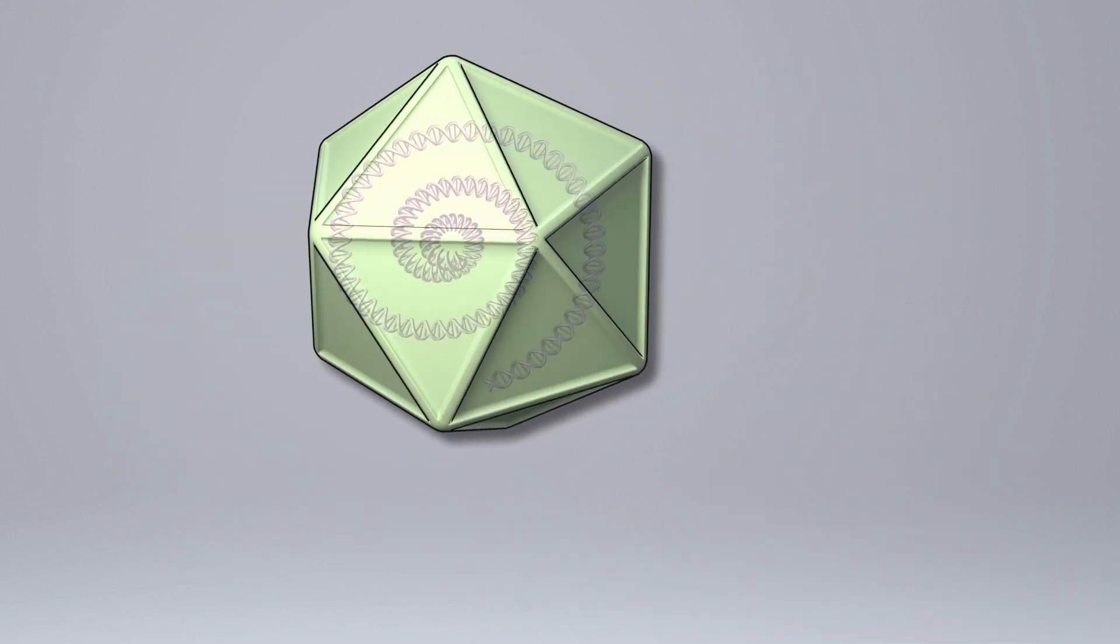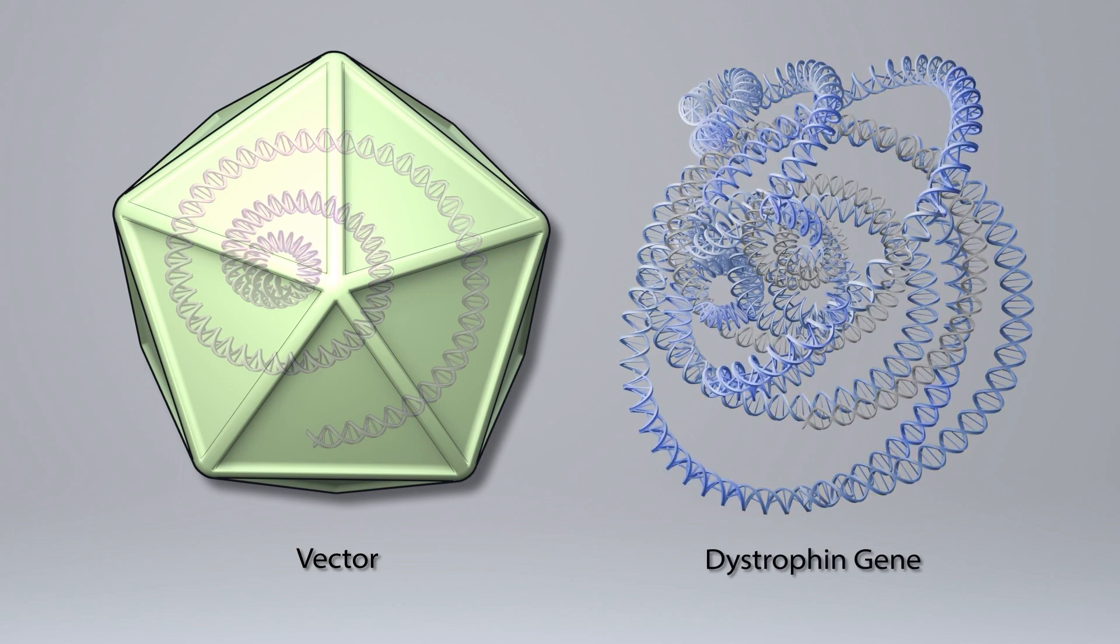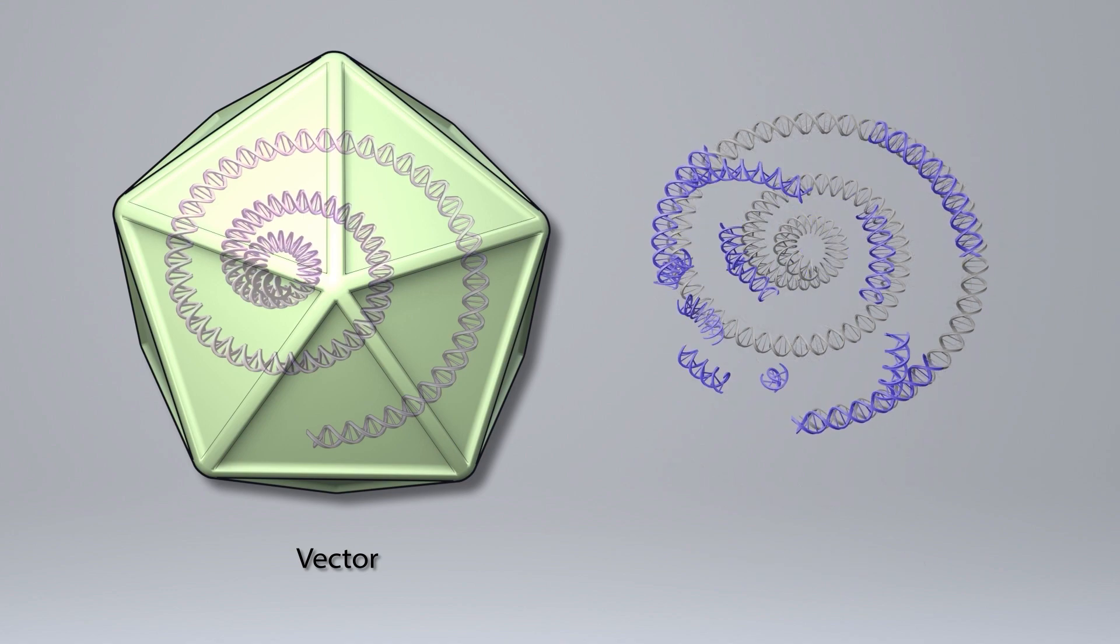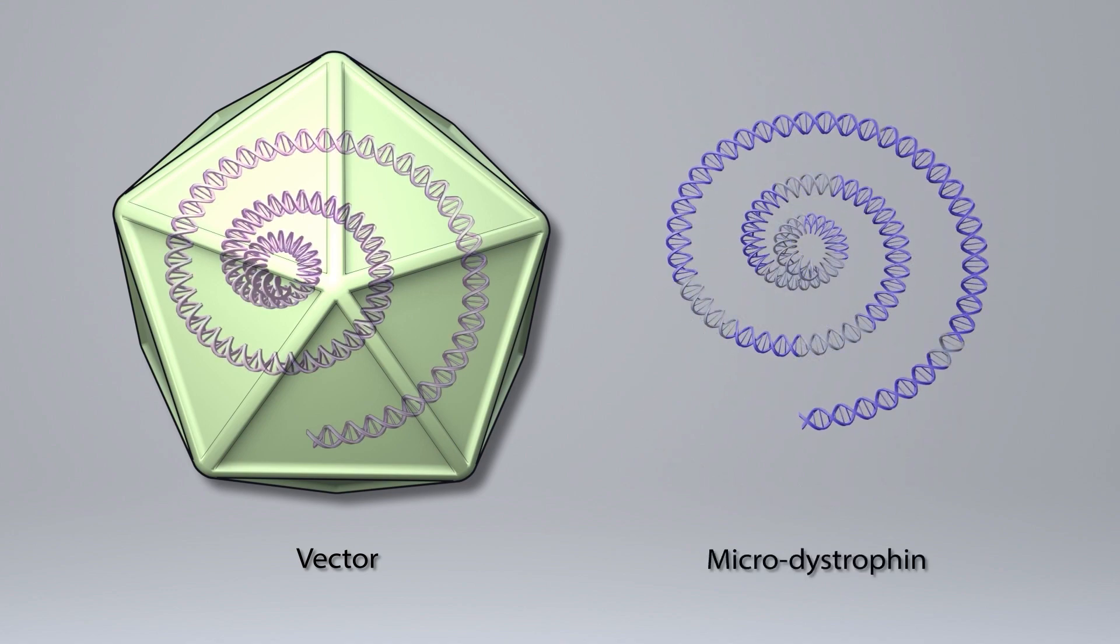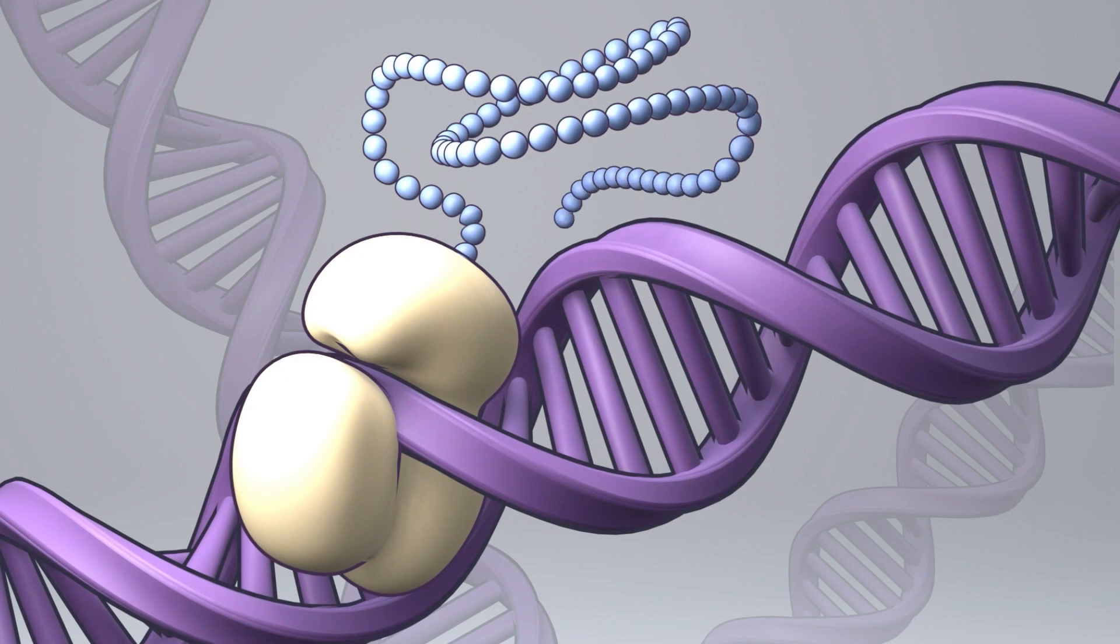The virus with the gene is called the vector. The normal dystrophin gene is too large to fit inside the virus. Scientists made a smaller version called microdystrophin that fits inside the virus and still produces a functional protein.